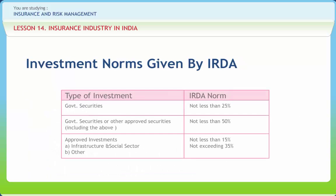In practice, the regulatory framework and the opportunities of investment determine the overall asset allocation and portfolio composition of an insurance corporation. The Insurance Regulatory and Development Authority has laid down the following pattern of investment of money received by way of premium so that public money is safeguarded by the insurance companies, as shown in the IRDA norms table.